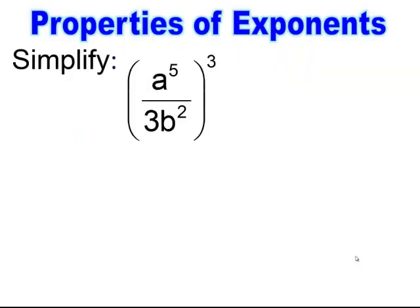Pause and try. When you simplify this, be very careful not to miss the numerical part. a to the 5th — you get a to the 15th because you're multiplying those powers. Now remember, it's 3 to the 3rd power. 3 to the 3rd power is 3 times 3 times 3, which gives us 27. And then b to the 2nd raised to the 3rd power gives me b to the 6th power.